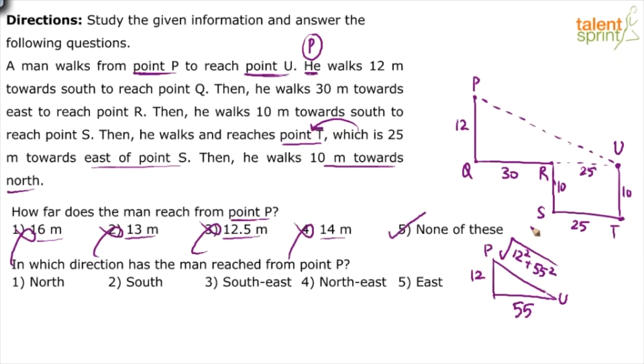Look at next question. In which direction has the man reached from point P? From point P in which direction has he reached? What direction has he gone to? This is south, east. Between south and east, anything between south and east is southeast. So option three is the answer here. So the first one has option five as the answer, the second one is option three.